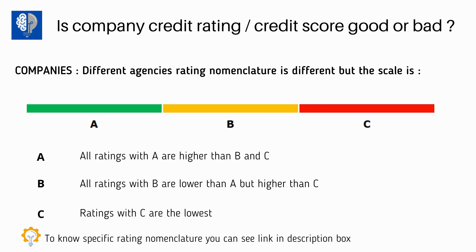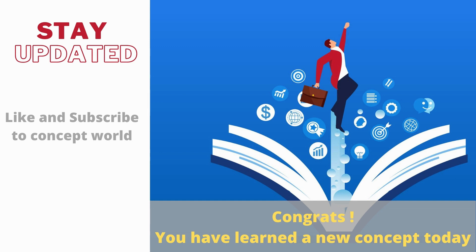For a company, there is no score but a letter-based nomenclature system. Different agencies like S&P have different nomenclatures, but the concept is they are in A, B, or C categories. All ratings with A are higher than B and C — whether it is A, AA, or AAA+, all fall above B. All ratings with B are lower than A but still higher than C. Ratings with C are the lowest, so you should avoid companies in the C zone. A link in the description box explains the specific ratings given by different agencies.